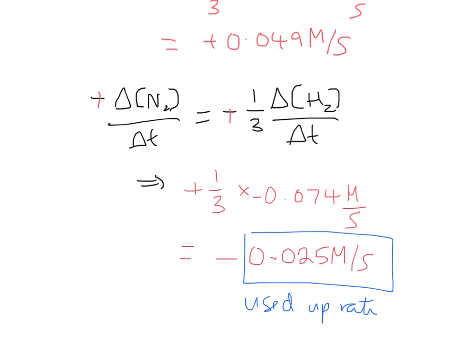So why do we talk about used up? Why don't we like negatives? Well, humans seem to have this problem with negative numbers, so wherever possible, we change the language to forms like used up, or consumed, or reacted, as a way to avoid giving the negative result. In this case, the rate at which nitrogen is being used up is positive 0.025 molar per second.